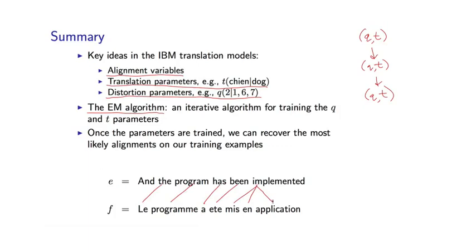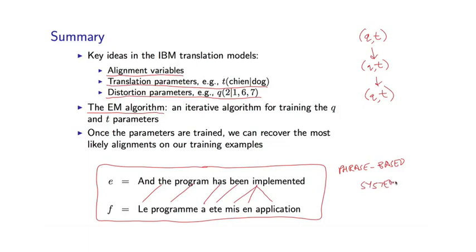And this is actually how the IBM models are currently used in machine translation systems. They are a critical component in that they allow us to recover these alignments in our training examples. And in the next lecture of this course, we'll talk about phrase-based systems, and phrase-based systems are going to make very direct use of the alignments which are recovered using the IBM models.